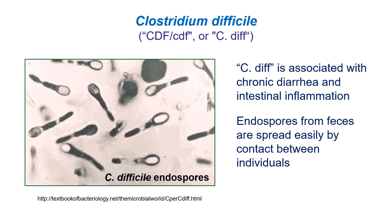C. diff can be from the environment — its endospores can be almost anywhere and are associated with feces. It can live in your gut, and some of us probably have it right now in small numbers without any problem. But in a hospital setting it's hard to get rid of and is easily transmitted due to improper disinfection and sterilization techniques.